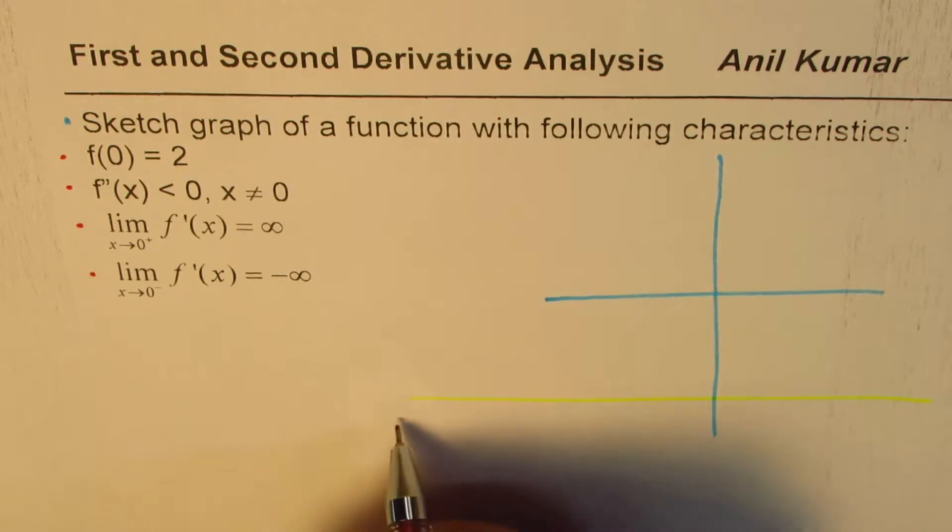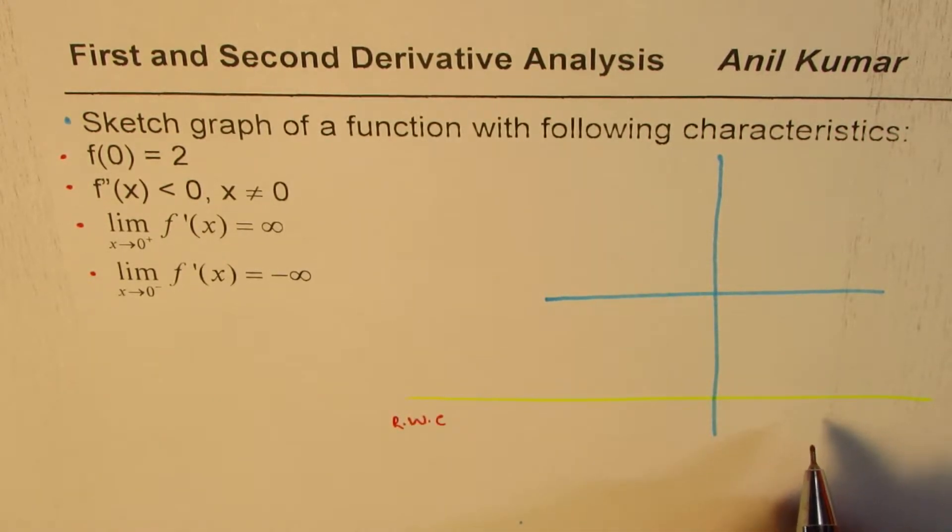It's kind of a rough work column for us, which is a row in this case. We'll try to analyze what is given in this part and then sketch on the graph.